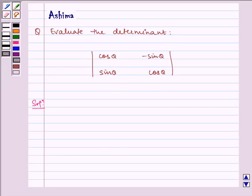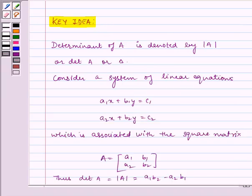Before writing this solution, let us understand the key idea. Determinant of A is denoted by |A| or det A or delta.